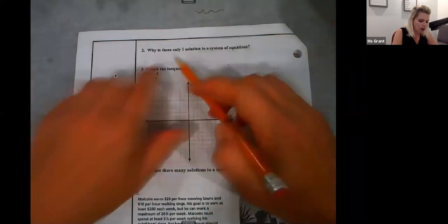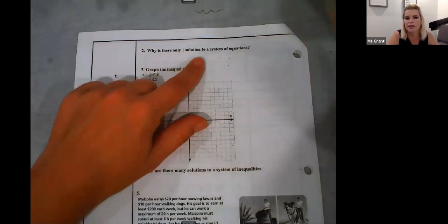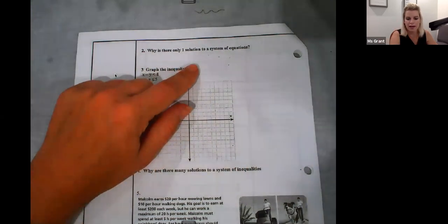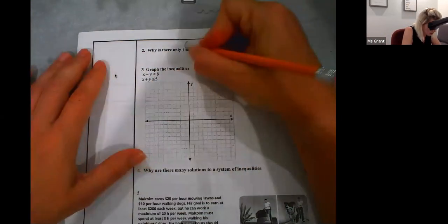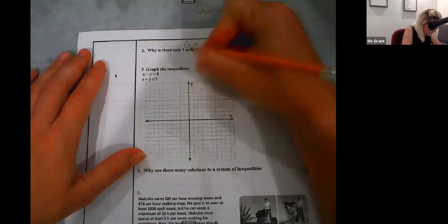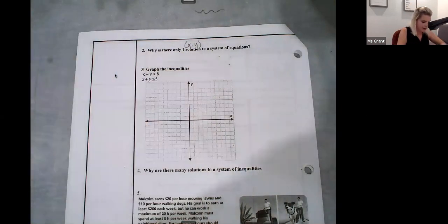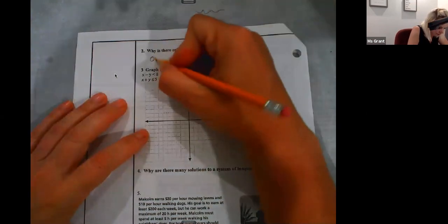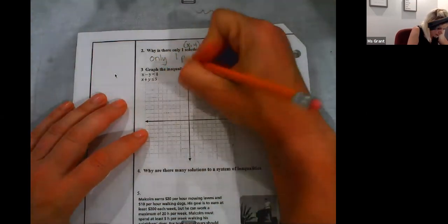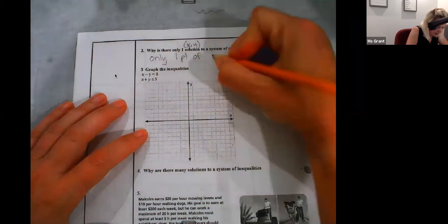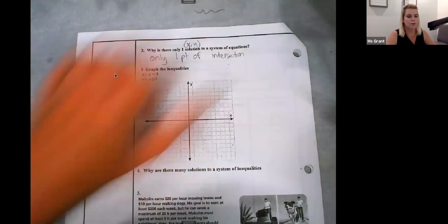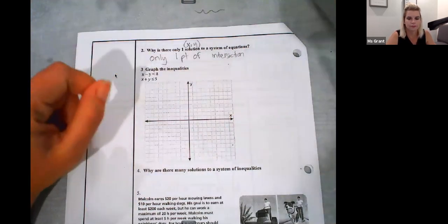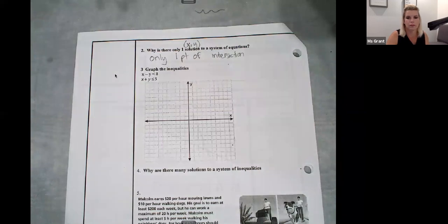Turn the page, please. Why is there only one solution to a system of equations? Why only one answer? One ordered pair answer. Remember, a solution means an X comma Y. So, there's only one solution. Because there is only one point of intersection.